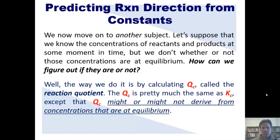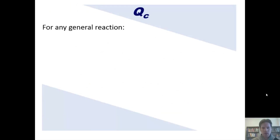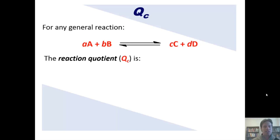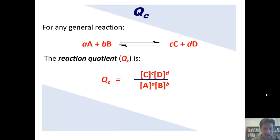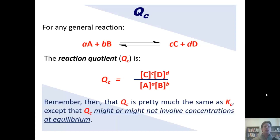QC is pretty much exactly the same as KC, except that QC may or may not derive from concentrations that are at equilibrium. For any general reaction, QC, the reaction quotient, is equal to this expression. You should note that QC looks exactly the same as KC, except that the concentrations C, D, A, and B might or might not be at equilibrium.